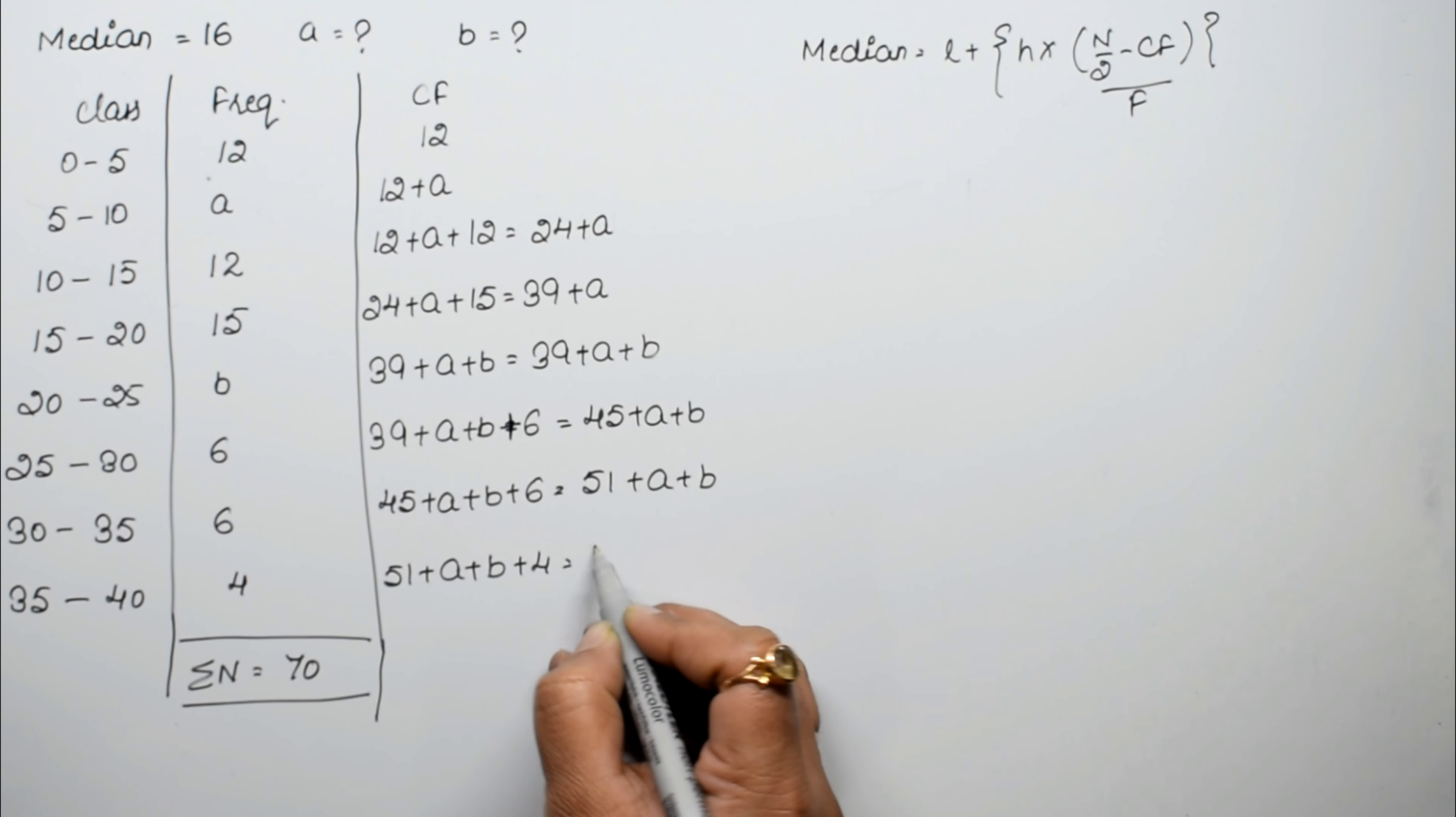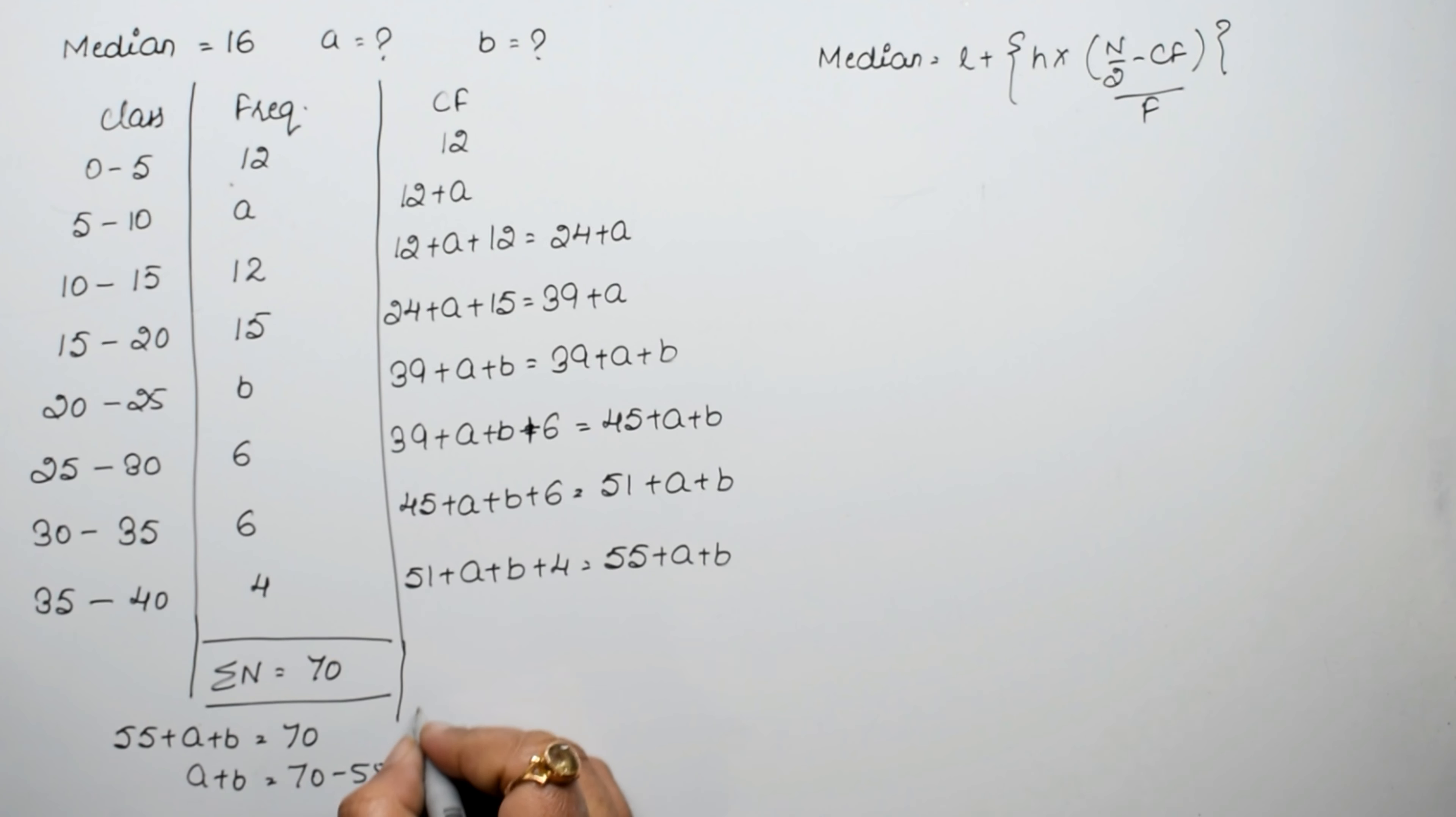Then 55 plus A plus B. Now we know the total is 70. So 55 plus A plus B equals 70. Therefore A plus B equals 70 minus 55, which is 15. This is our first equation.